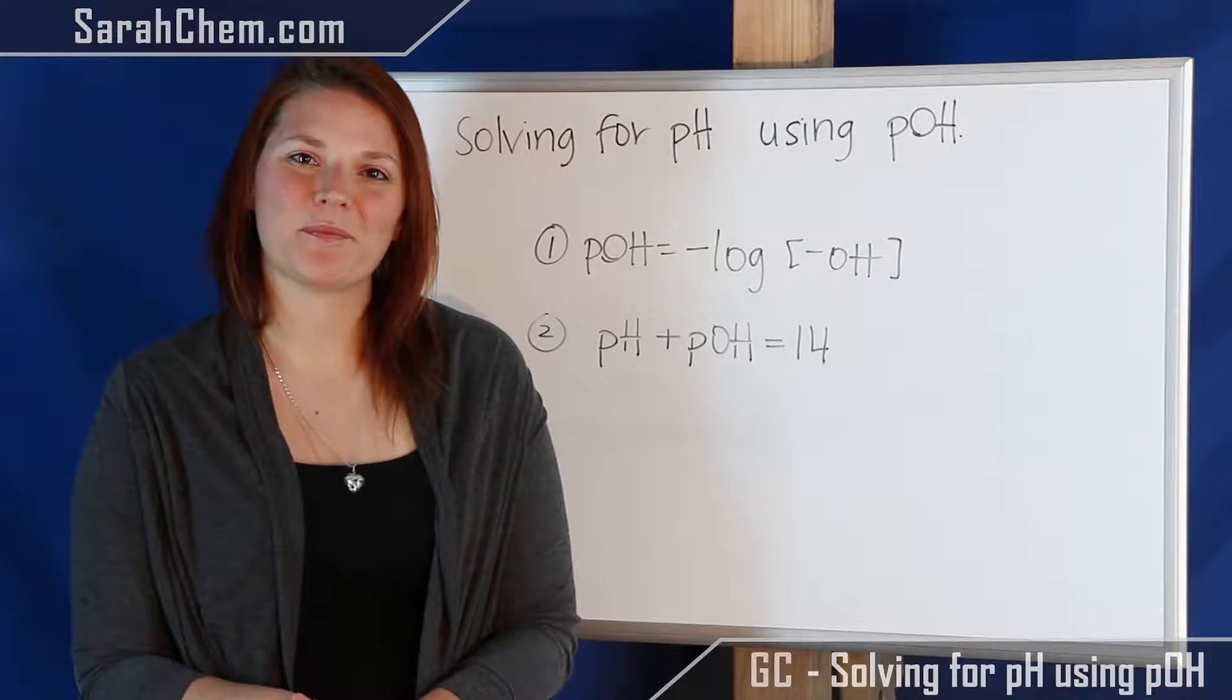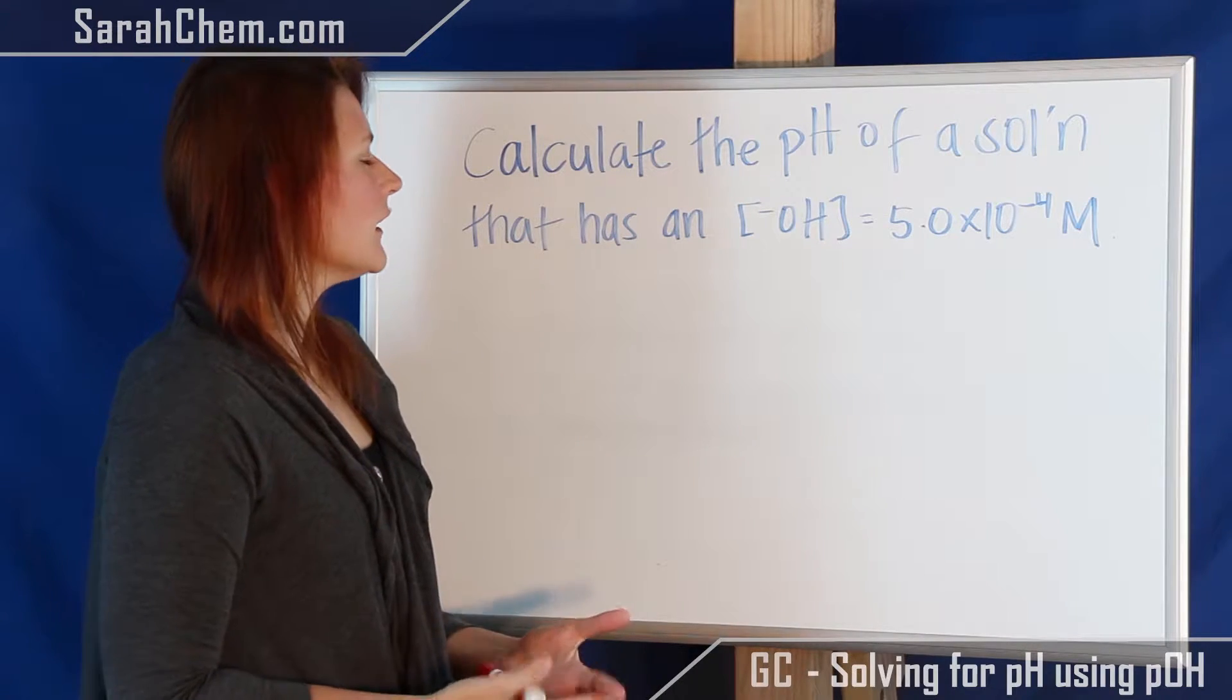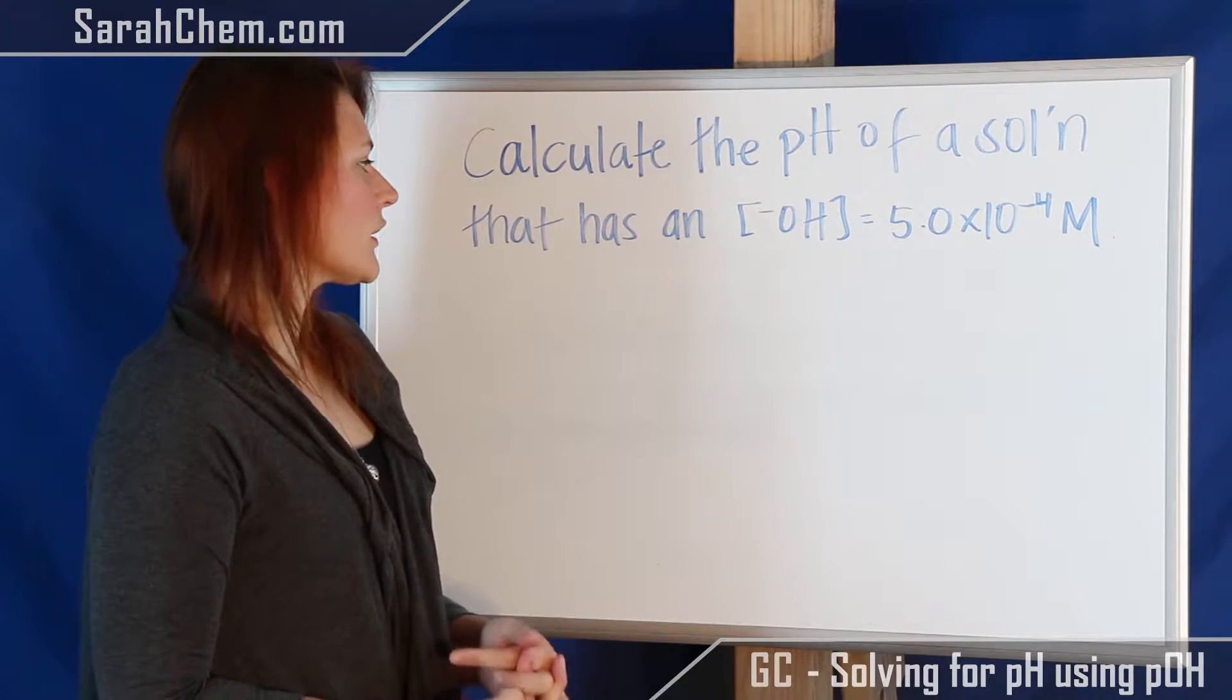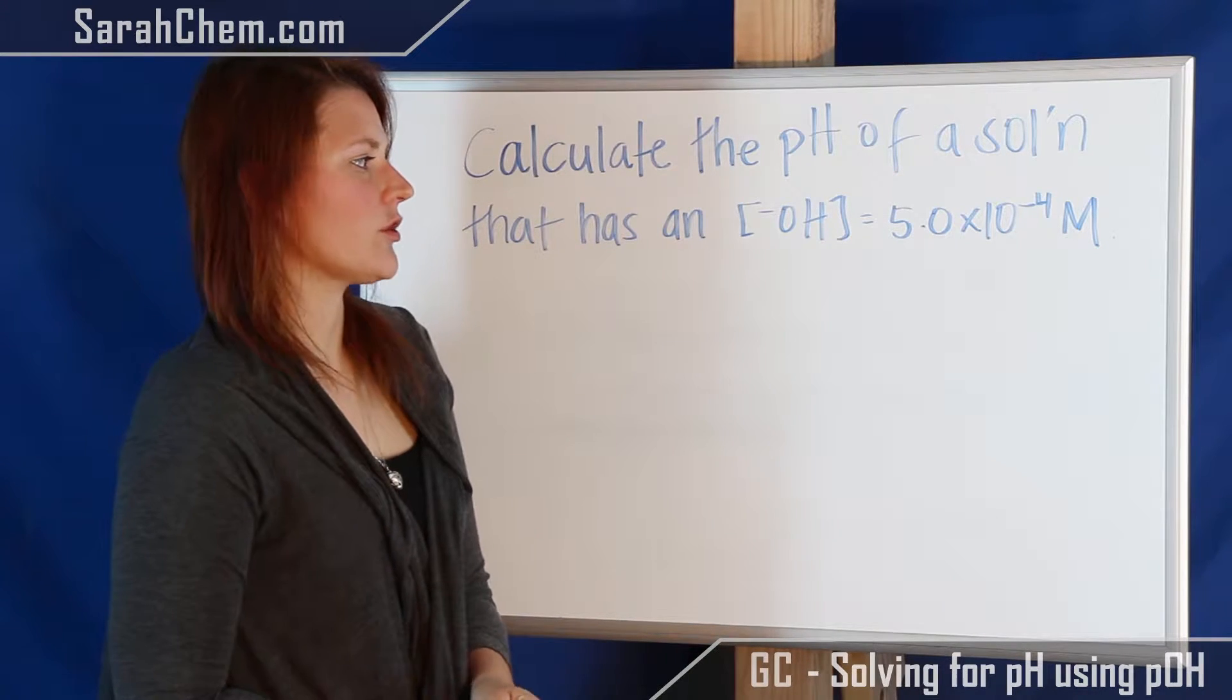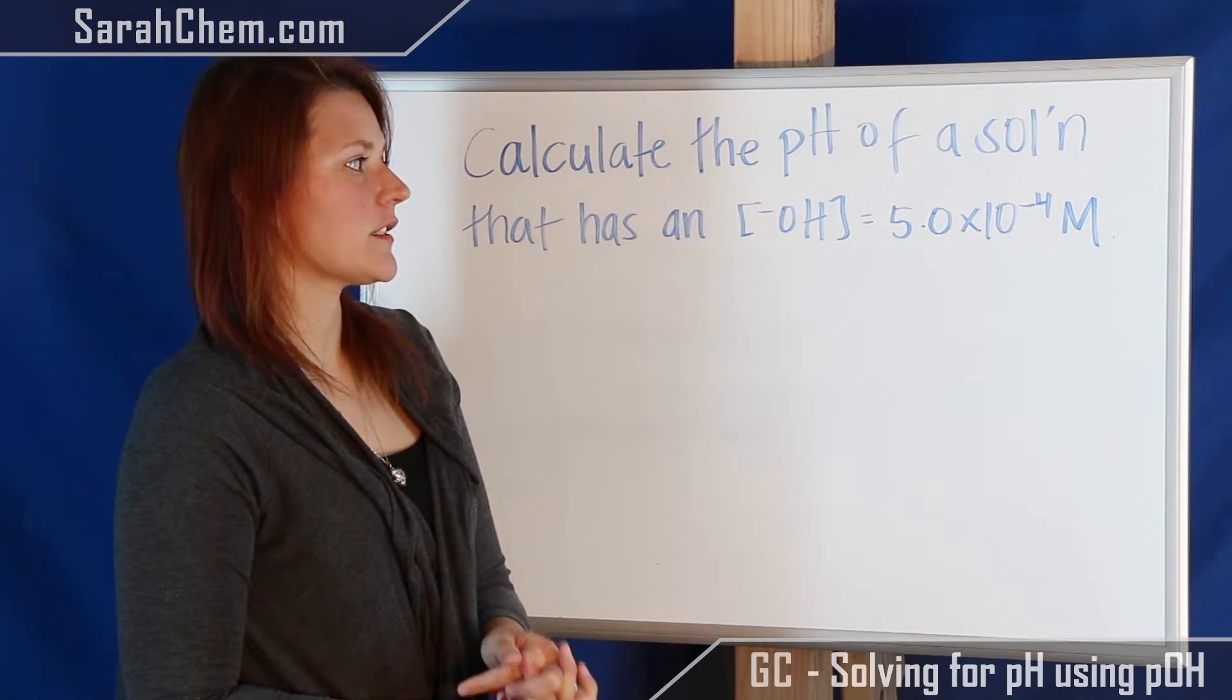Let's look at an example. Okay, so let's take a look at this example. It says, calculate the pH of a solution that has an OH concentration of 5.0 times 10 to the minus 4 molar.